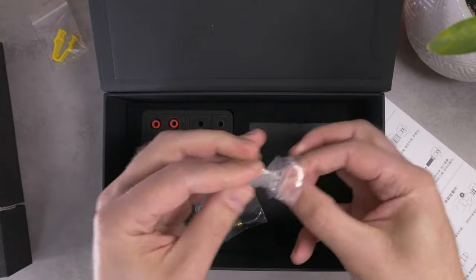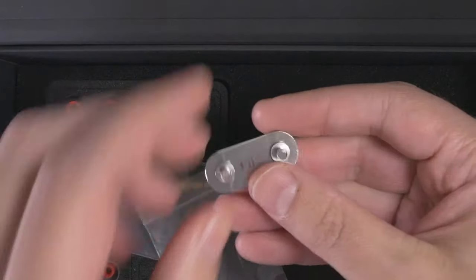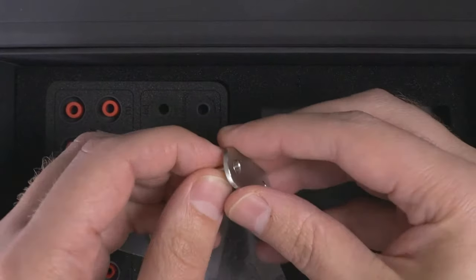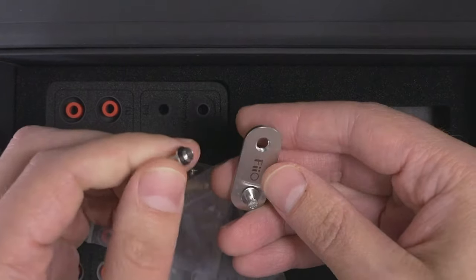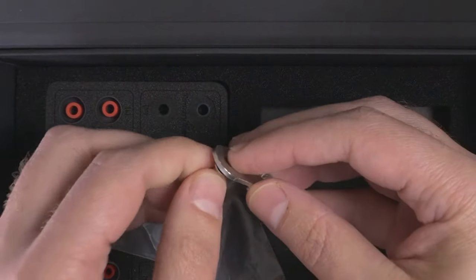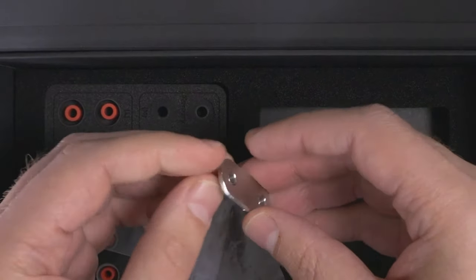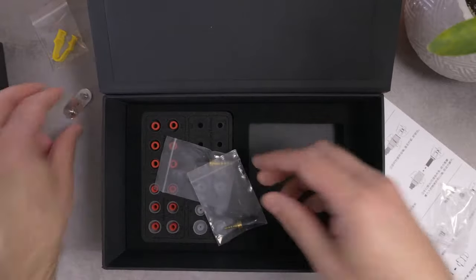Here, I'm guessing that this is the set of replaceable nozzles. This is actually kind of an interesting way that they packaged it. Punch in real quick here. They've got them on a metal plate and they screw into the metal plate. So I'm guessing that they will screw into the nozzle of the earphone. That's actually a pretty interesting way of storing those.